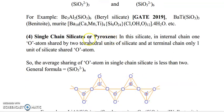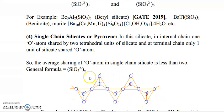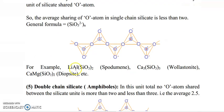Next is single chain silicate, also known as pyroxene. In internal chain positions, one oxygen atom is shared by two tetrahedral silicate units, and at the terminal chain, only one unit shares an oxygen atom. So the average sharing of oxygen atoms in single chain silicate is less than 2. The general formula is SiO₃²⁻ N. For example, LiAlSi₂O₆ is known as spodumene; Ca₃Si₃O₉ is known as wollastonite; and CaMgSi₂O₆ is known as diopside.